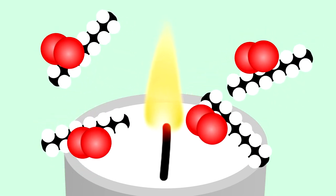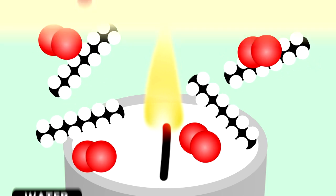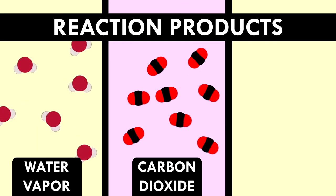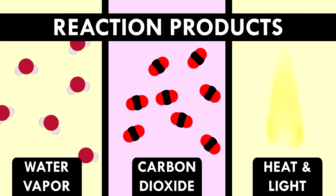And the products of the reaction, that means the stuff that's produced, is water vapor, carbon dioxide gas, and heat and light. And that's the flame that you see.